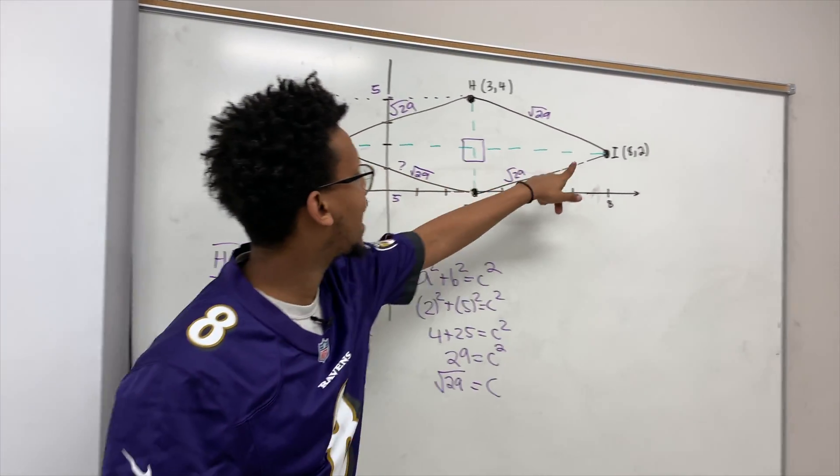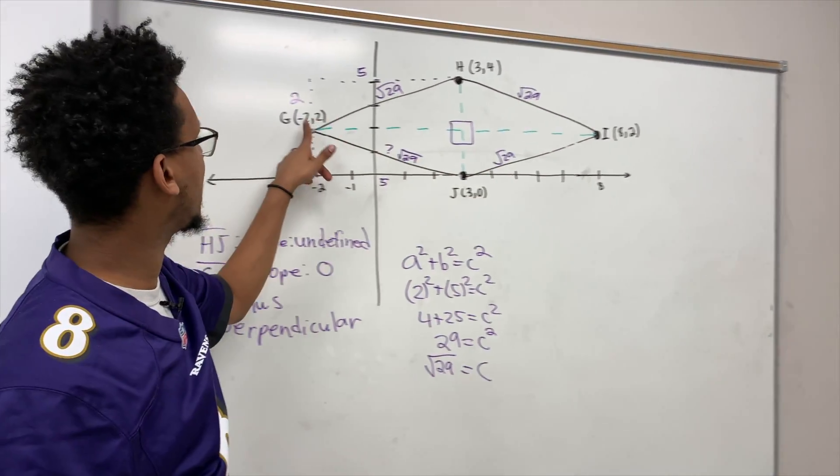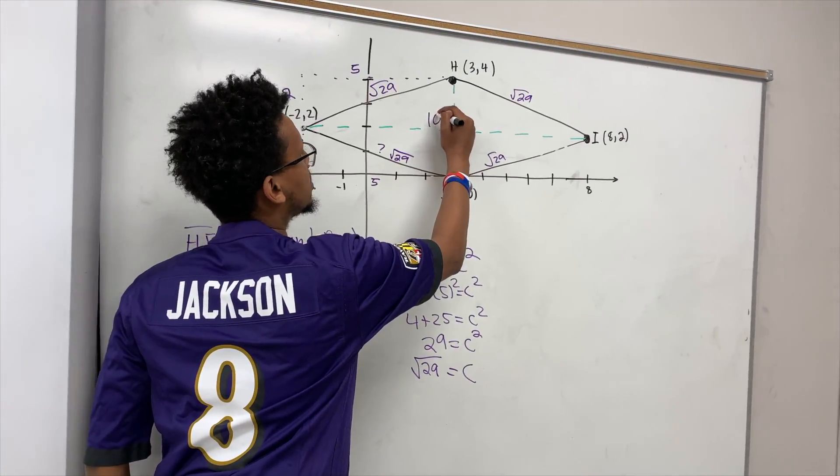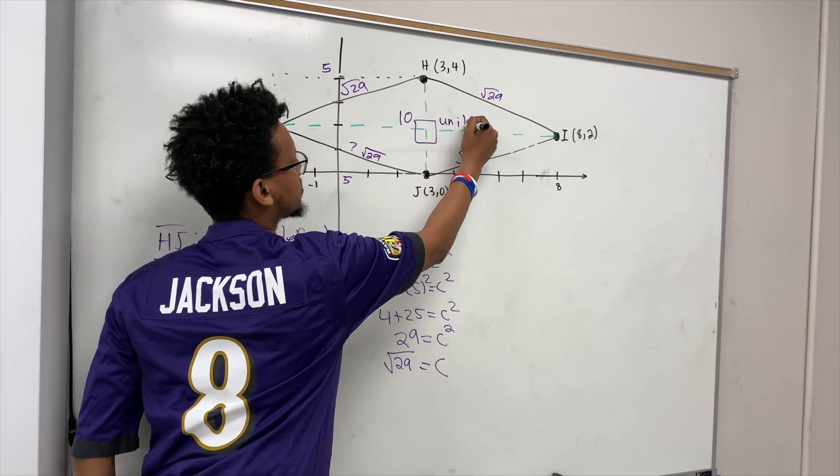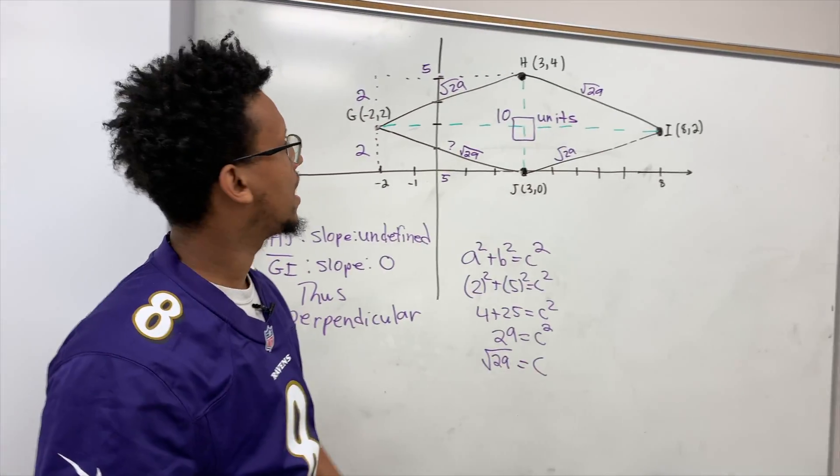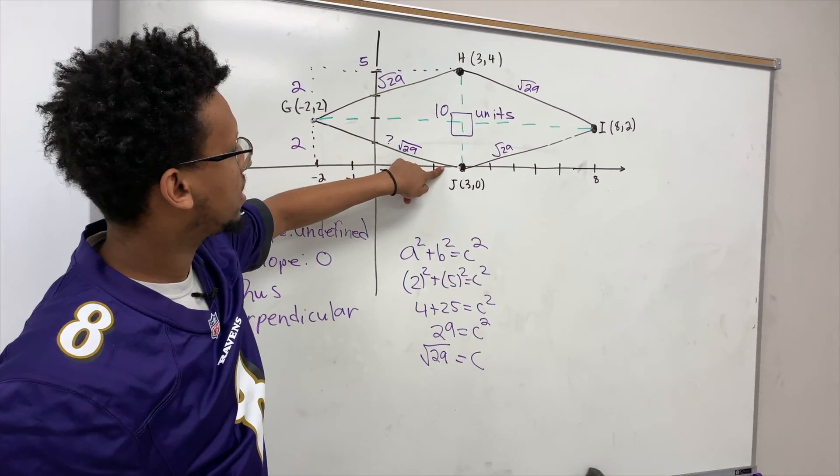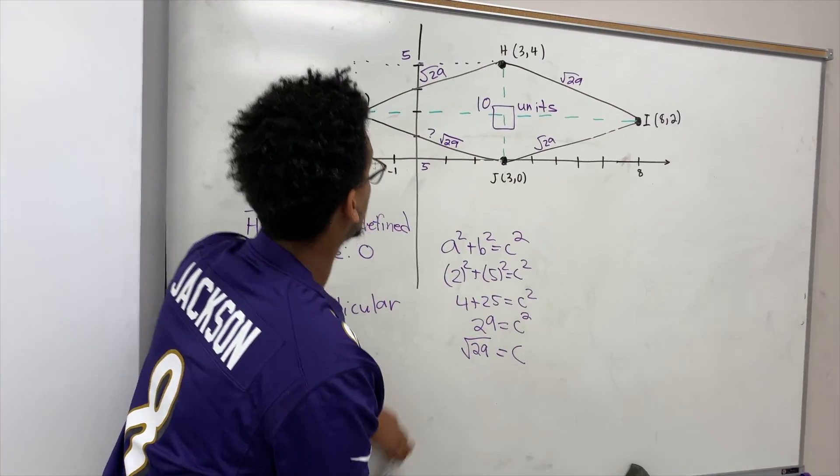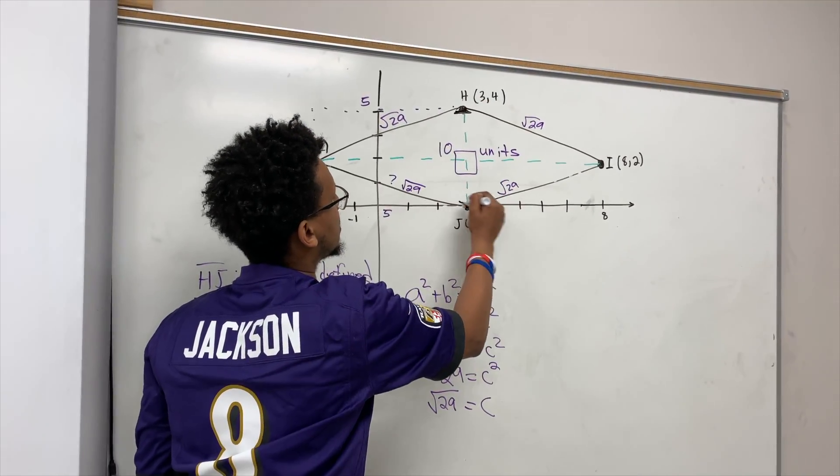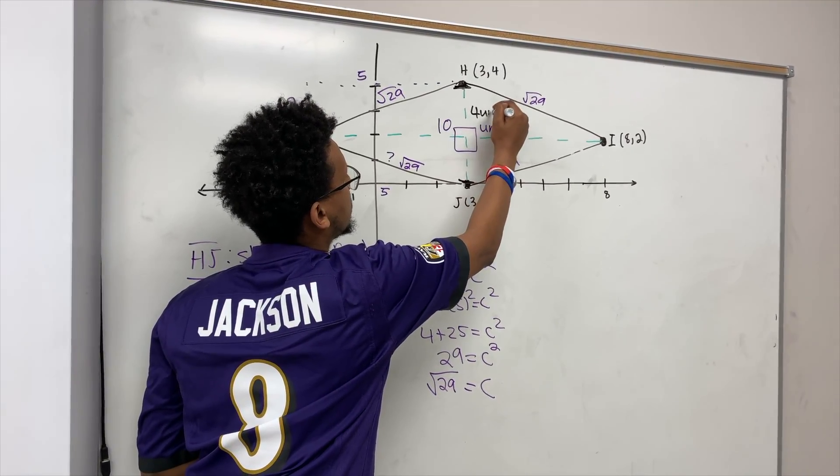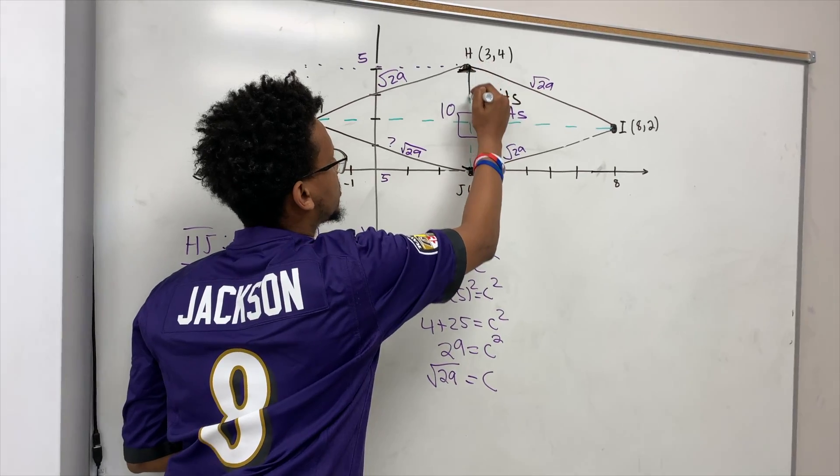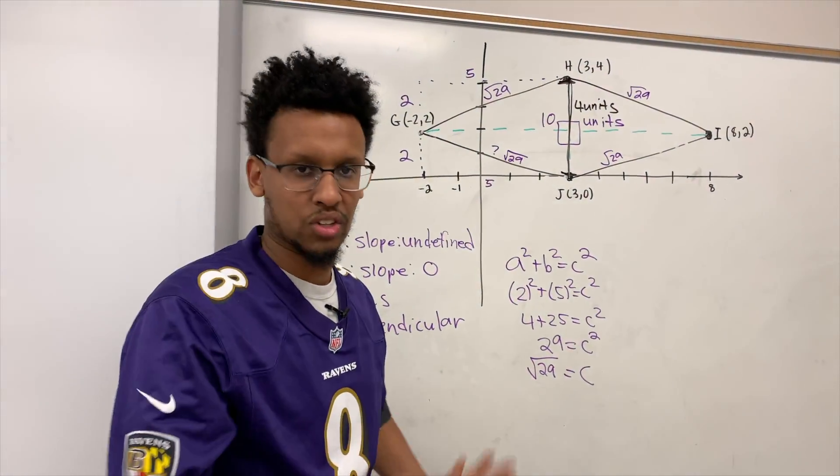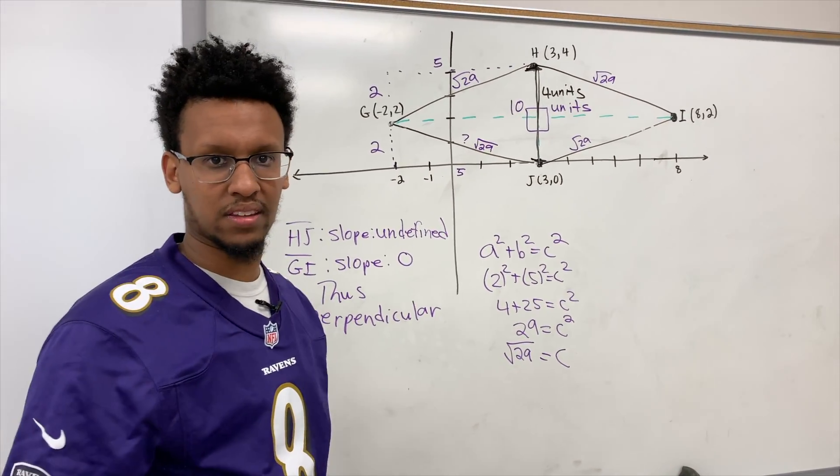So from G to I, which is from negative two to eight, is a distance of 10 units. And then from H to J, look at your y's, you're going from zero to four. So this, from here to here, is a distance of four units. So as you can see, the diagonals are not the same, so it's not a square.